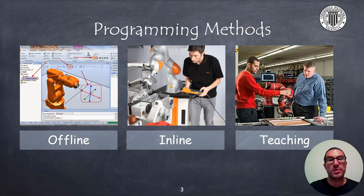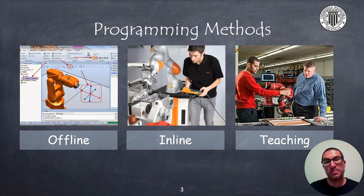Here I show some robot programming methods. Offline programming is carried out by computer software in which all robot movements to perform are specified with a previous computer task on a computer. Once the program is verified using a simulation tool, it is transferred to the robot controller to run it.